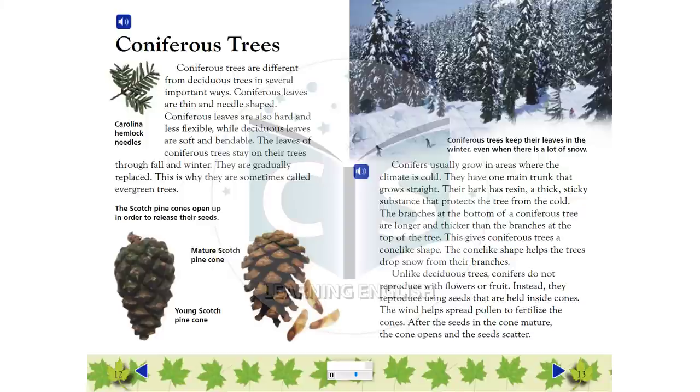Unlike deciduous trees, conifers do not reproduce with flowers or fruit. Instead, they reproduce using seeds that are held inside cones. The wind helps spread pollen to fertilize the cones. After the seeds in the cone mature, the cone opens and the seeds scatter.